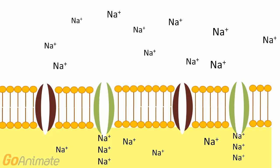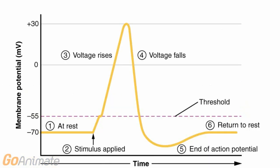When the neuron is stimulated by a neurotransmitter, voltage-gated sodium channels open, allowing sodium to move into the cell. We say the neuron is depolarizing. The membrane is becoming less negative as positively charged sodium moves into the neuron.